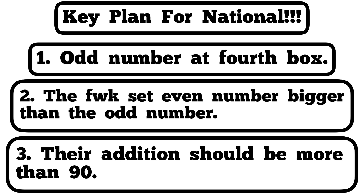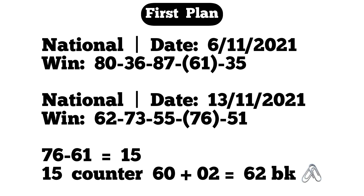With the first plan, let's open our papers. For national lotto 6th November 2021 — that is when the key started setting. Anything below 6th November 2021 means that key is likely not to drop at all, because the key officially started setting on that date. When we go to the winning numbers at the fourth position, it says 61. Then the following week, 13th November 2021, the fourth position was 76.